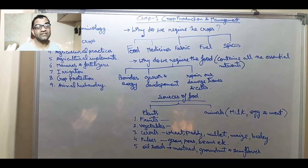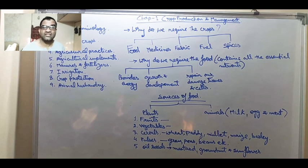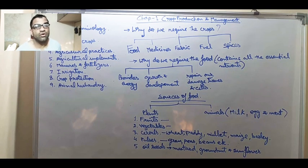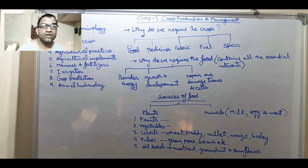Oil seeds - oil seeds are very important because we use to extract the oil from the seeds. For example, mustard oil - we are getting the mustard oil from mustard seeds. In the same case, we are getting the groundnut oil from the groundnut seeds and the sunflower oil from the sunflower seeds.